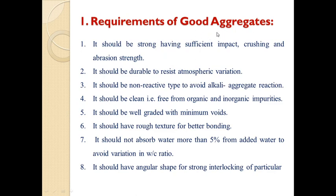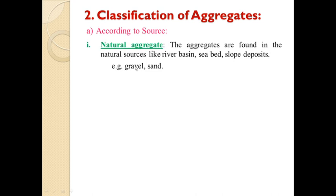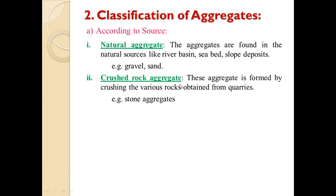These are all the requirements of good aggregates. Next, the classification of aggregates. Aggregates are generally classified into three categories: according to source, according to size, and according to shape. According to source, natural aggregates are found in natural sources like river basins, seabeds, and slope deposits — for example, gravel and sand found in riverbeds. Next is crushed rock aggregate, formed by crushing various rocks obtained from quarries.